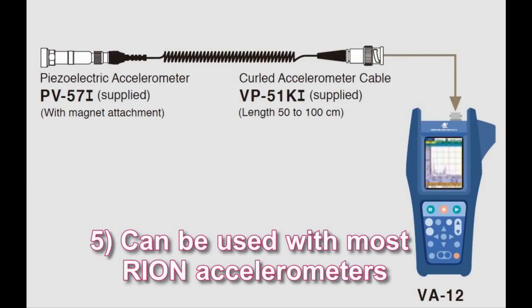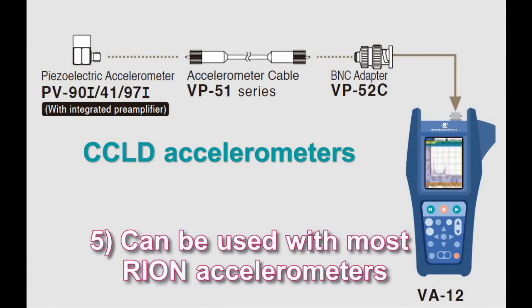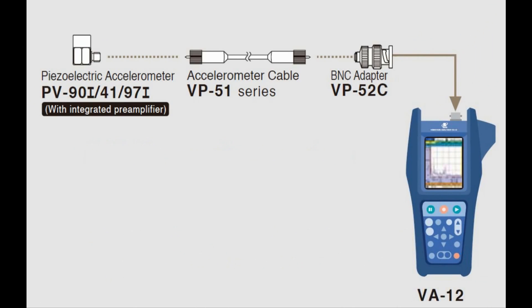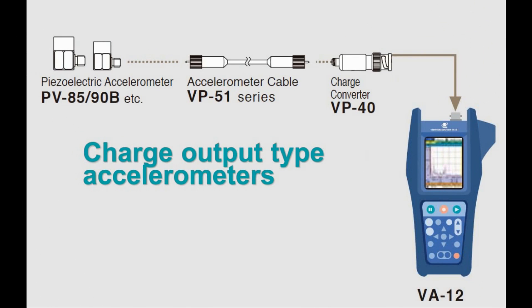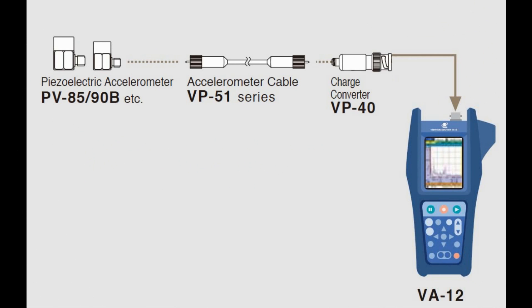Feature 5: Can be used with most Rion accelerometers. CC-LD accelerometers with integrated preamplifiers can be connected using a BNC adapter. Charge output type accelerometers can be connected using a VP40 charge converter.